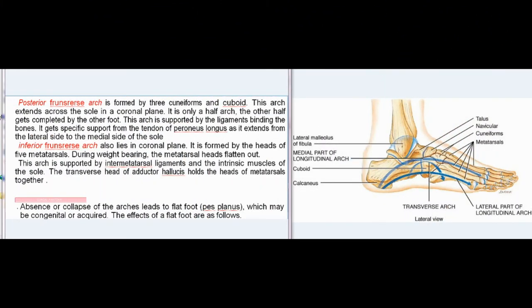The posterior transverse arch is formed by the three cuneiforms and cuboid. This arch extends across the sole in a coronal plane. It is only a half arch; the other half is completed by the other foot. This arch is supported by the ligaments binding the bones, and gets specific support from the tendon of peroneus longus as it extends from the lateral side to the medial side of the sole. The anterior transverse arch also lies in a coronal plane; it is formed by the heads of the five metatarsals. During weight bearing, the metatarsal heads flatten out. This arch is supported by inter-metatarsal ligaments and the intrinsic muscles of the sole. The transverse head of adductor hallucis holds the heads of metatarsals together.